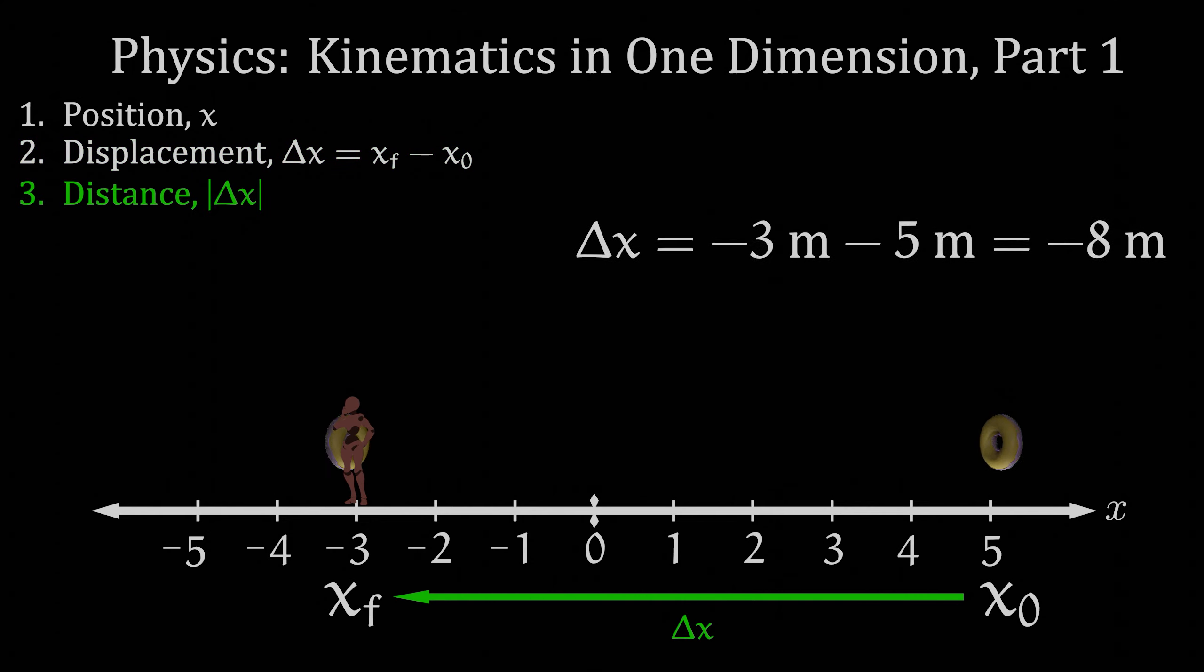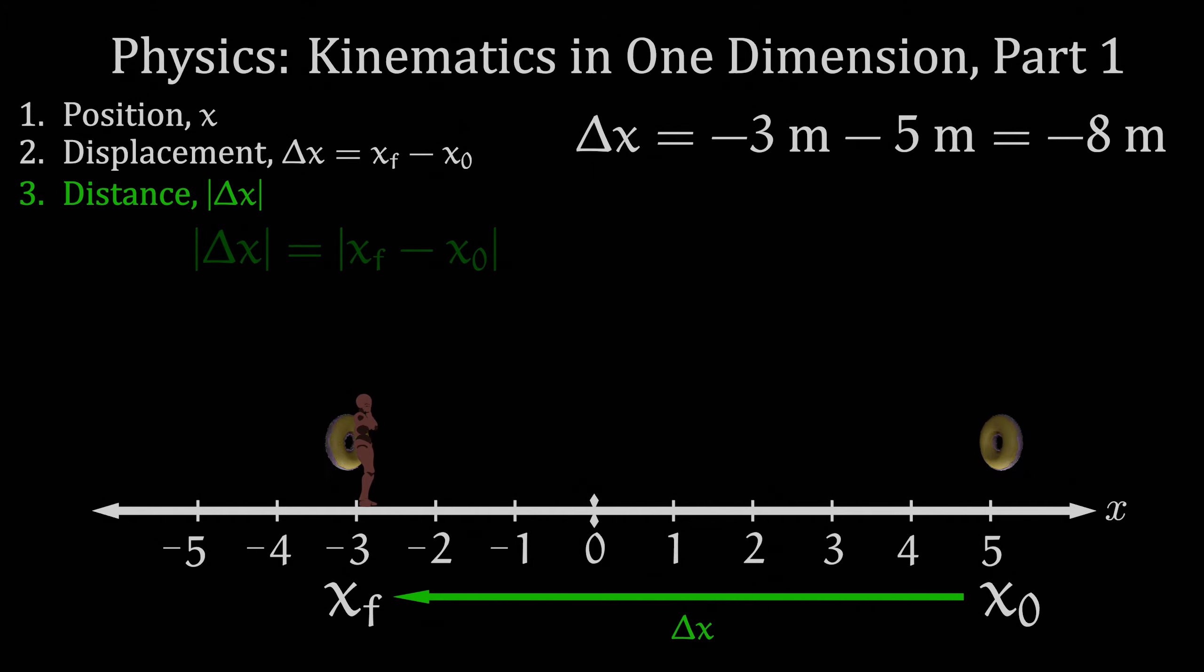Distance, on the other hand, is not a vector, it is a scalar. Distance is defined as the absolute value of displacement. For example, the displacement starting at the first donut on the right and going to the second donut on the left is negative eight meters, as we just found.